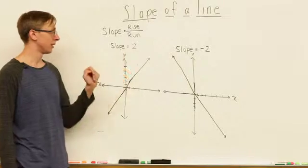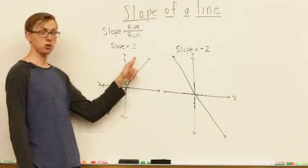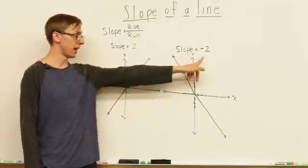Ok, so now let's look at this example of a line with slope of 2 and a line with slope of negative 2.